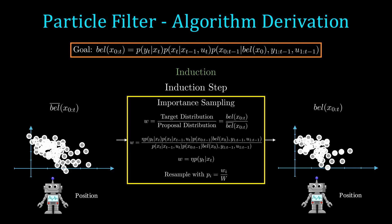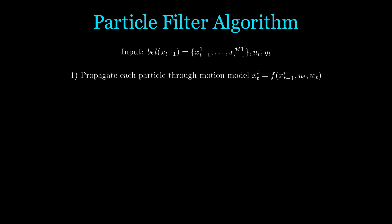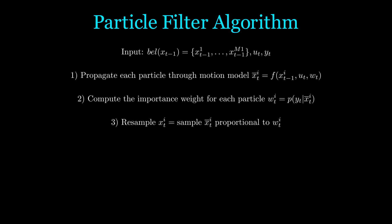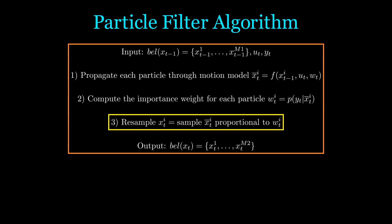It literally takes like 20 lines of code. Repetition is key, so let's write out all the steps on one slide. We have an input distribution for time t-1, which is represented by a set of particles. We also have the action and sensor measurements. We first propagate all the particles through the motion model with noise sampled individually for each particle. Then we compute the importance weights, and then we resample based on the distribution proportional to the weights. The output is simply another set of particles.